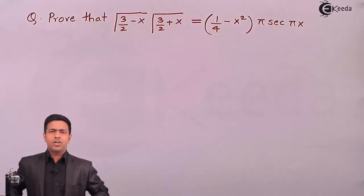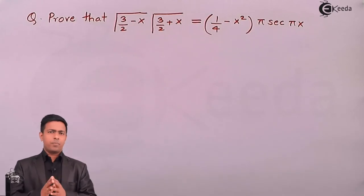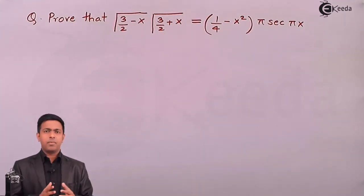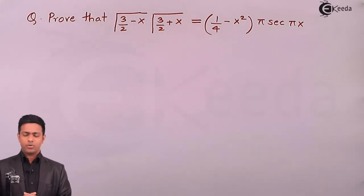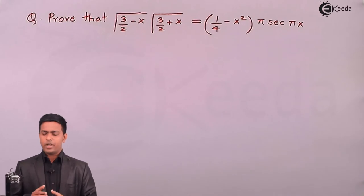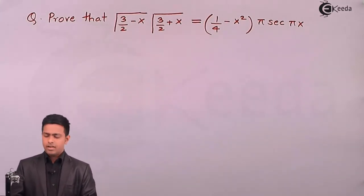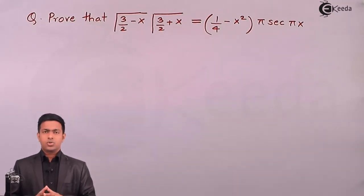Hey friends, here we will prove a property of the gamma function. The question is: prove that gamma(3/2 - x) times gamma(3/2 + x) equals (1/4 - x²) times π sec πx. The question is how to prove this.